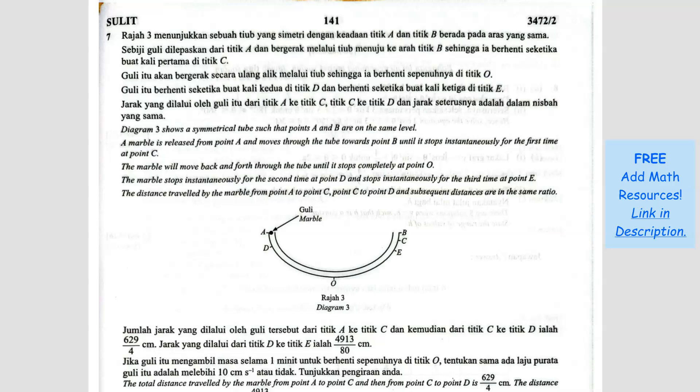Question number 7. Diagram 3 shows a symmetrical tube such that point A and B are on the same level. A marble is released from point A and moves through the tube towards point B until it stops instantaneously for the first time at point C.